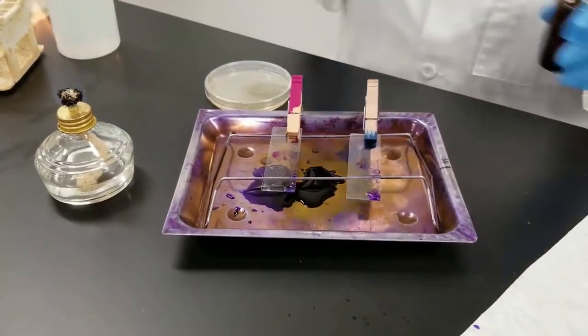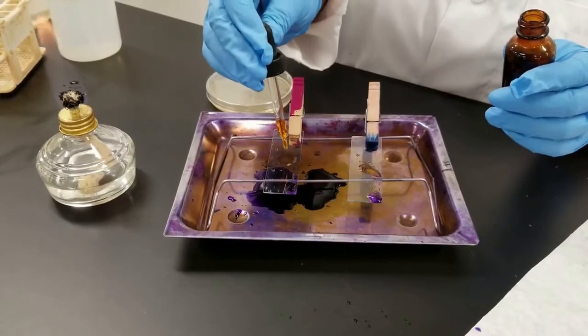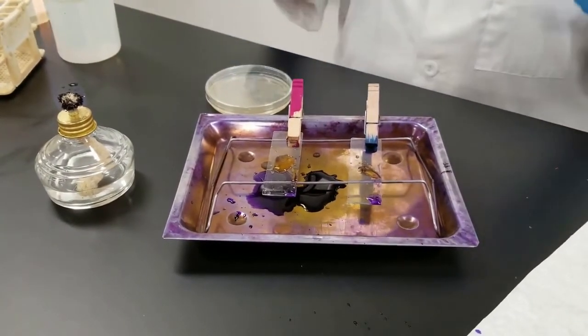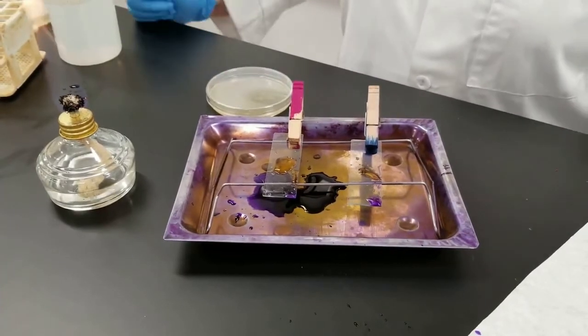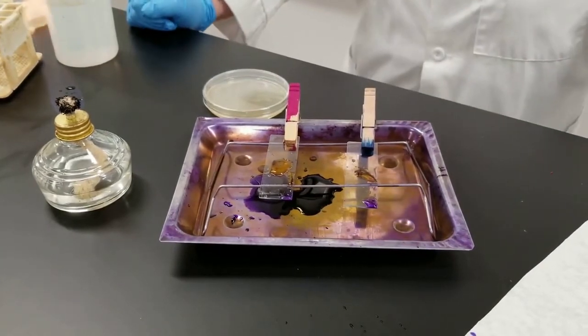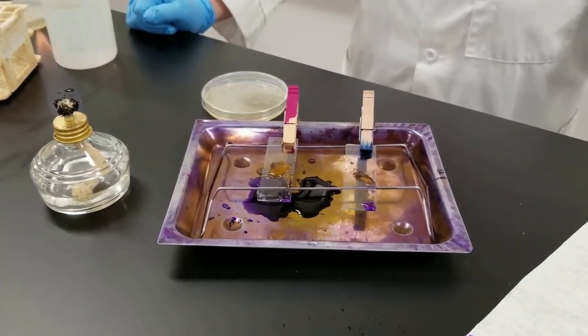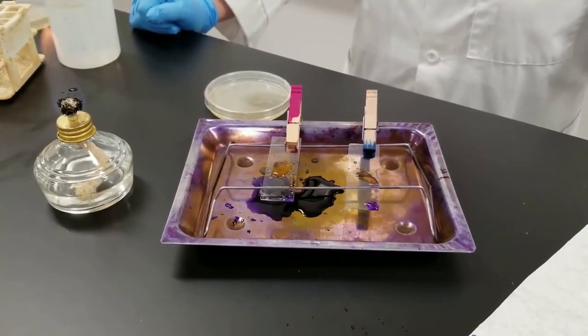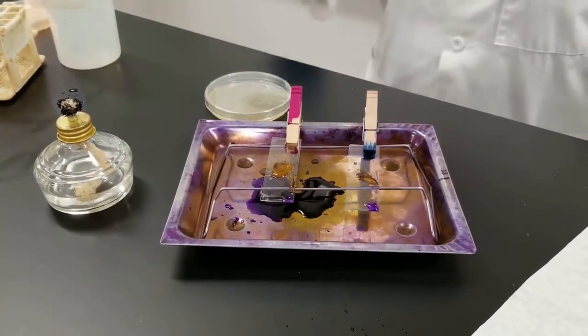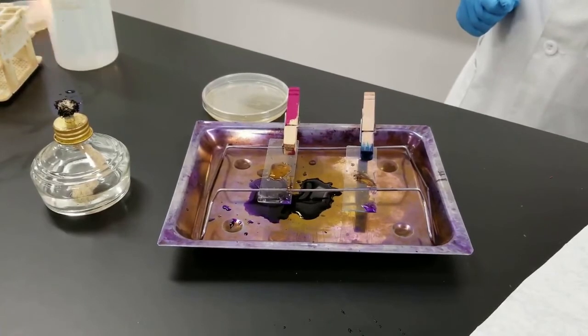Now, the second step is to add Gram's iodine. So I'm just going to flood the area with that, and that stays on for one minute as well. This is a mordant. It's going to help fix that Crystal Violet and help it stabilize in the cell wall. So I say that the cell wall is different between two major classifications of bacteria. The gram-positives, their cell wall is much thicker than the gram-negative cell wall. The gram-negatives have an extra outer membrane as well, and these differences in the chemical compositions are what make the staining process different in the end. So that iodine will remain on for a minute.